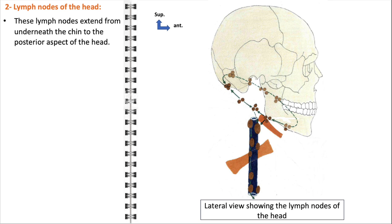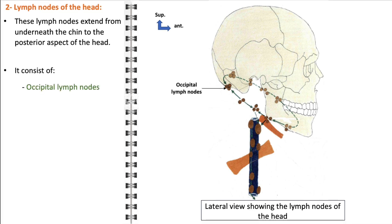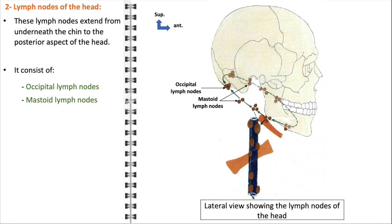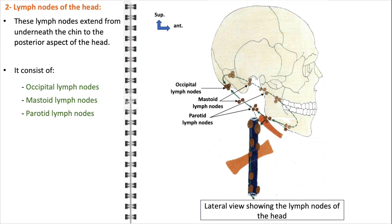The lymph nodes of the head are an essential component of the body's lymphatic system, extending from beneath the chin to the posterior aspect of the head. They include the occipital lymph nodes, located near the base of the skull at the back of the head, which drain the scalp and posterior cranial area; the mastoid (postauricular) lymph nodes, positioned behind the ear adjacent to the mastoid bone, responsible for draining the surrounding areas of the ear and part of the scalp; and the parotid lymph nodes, situated around the parotid gland near the cheeks, which primarily drain the upper facial region including parts of the eyelids and external ear.